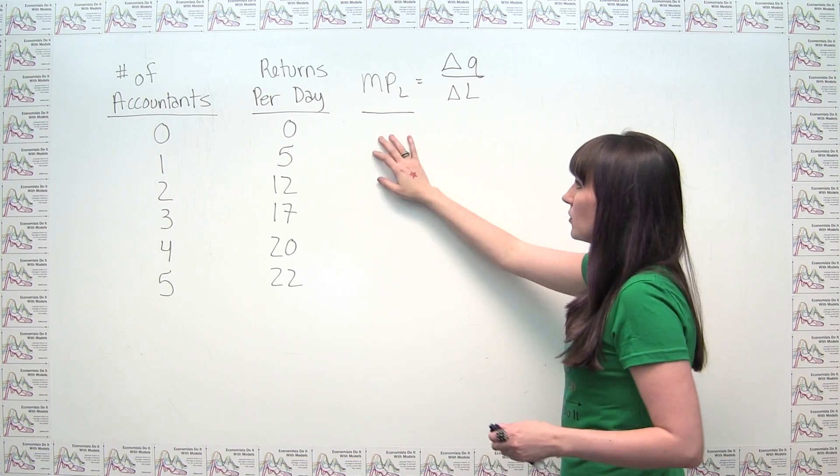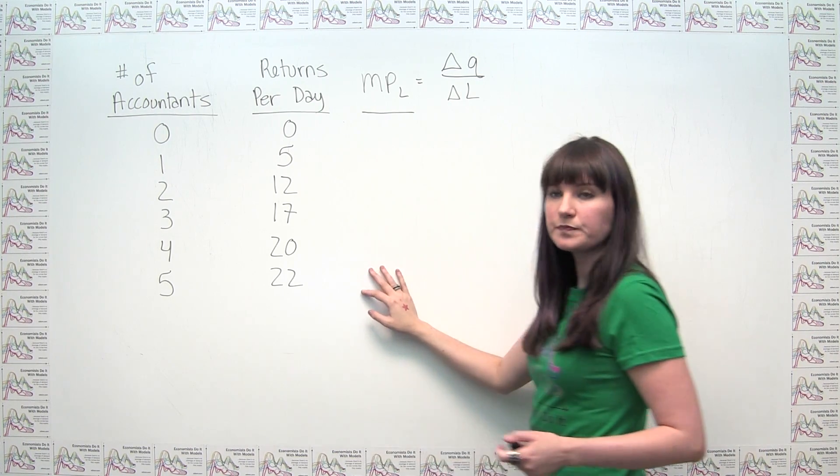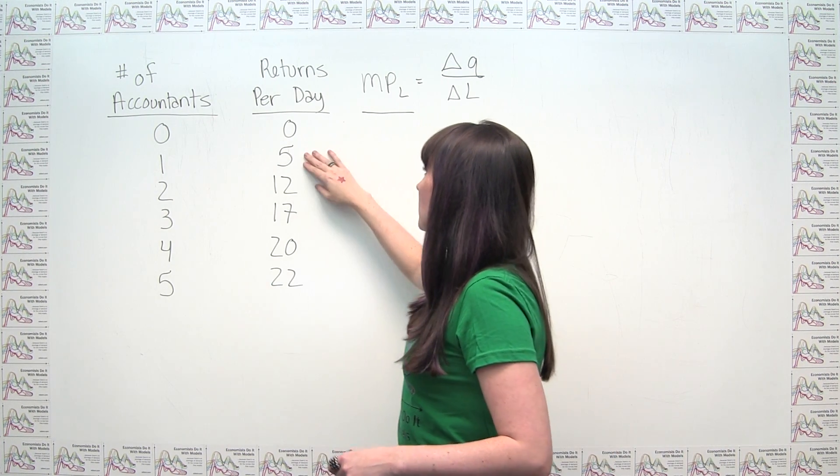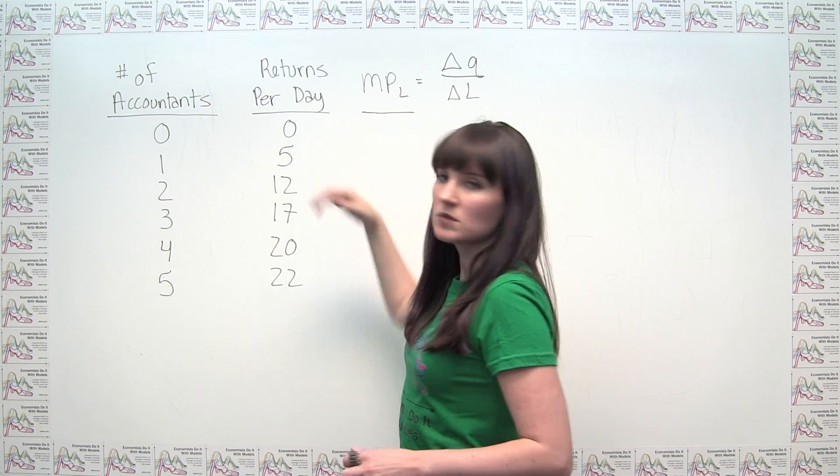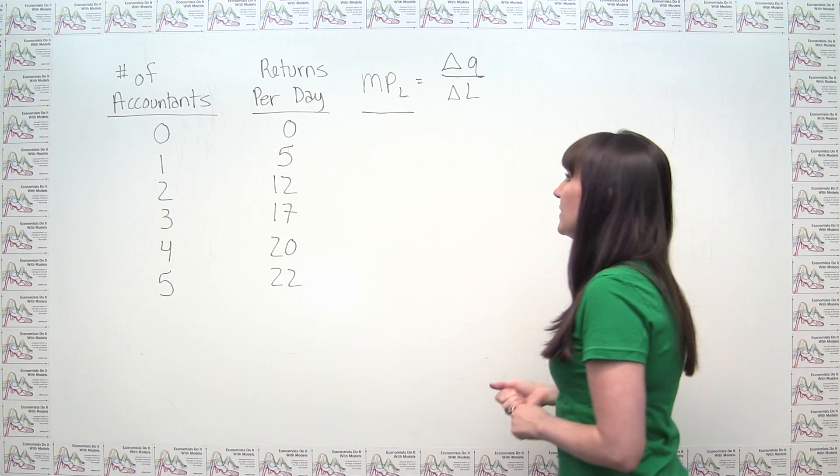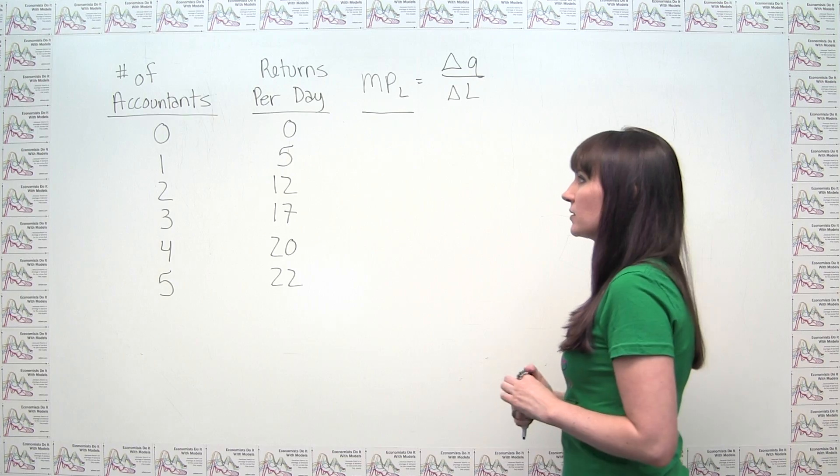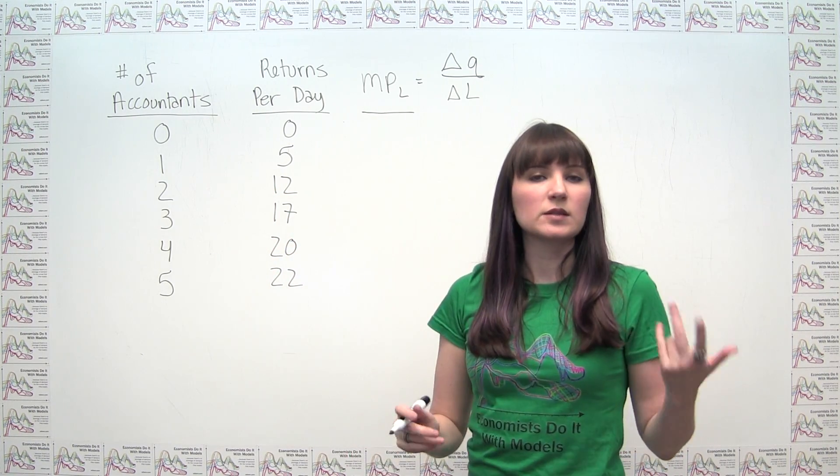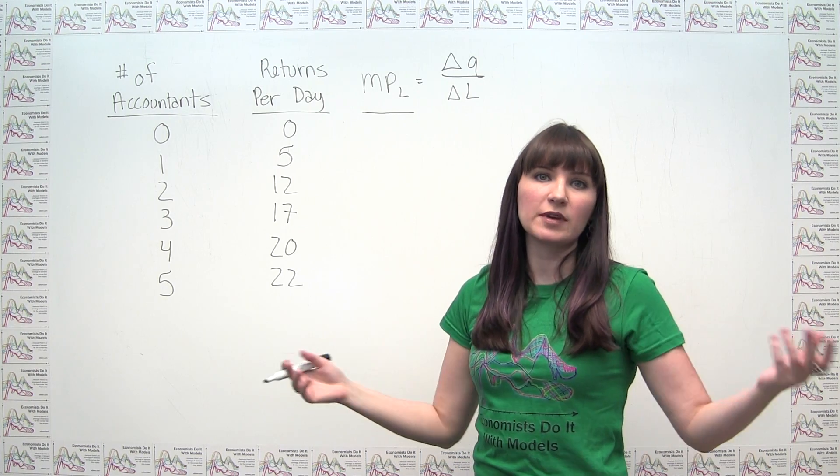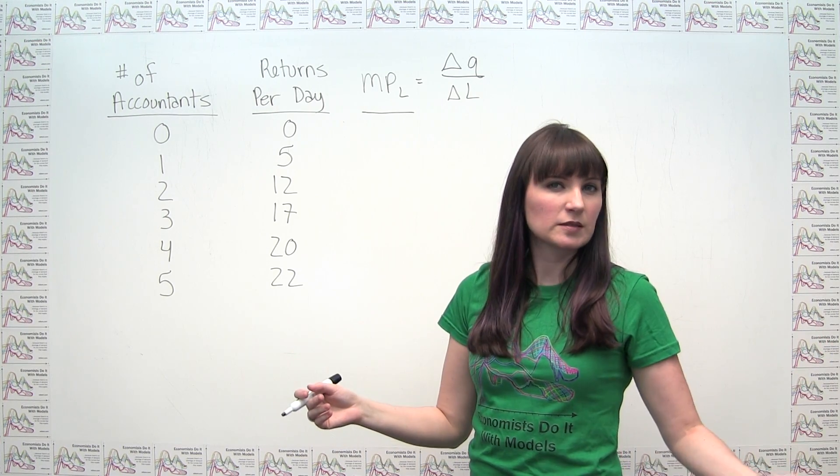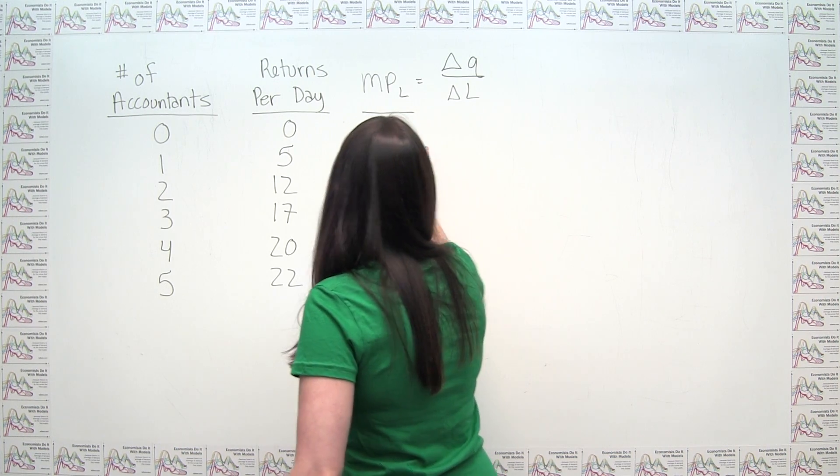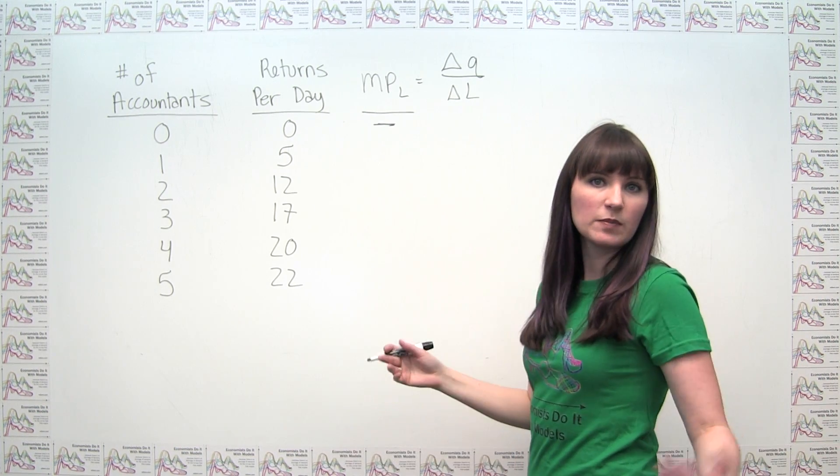We can go through and calculate this by comparing both the number of accountants to the one before, and also the returns per day to the one before. We can't really do a marginal product of labor for zero accountants, because asking how much did the zeroth accountant add to output doesn't really make sense. So here, you just put a line or not applicable.